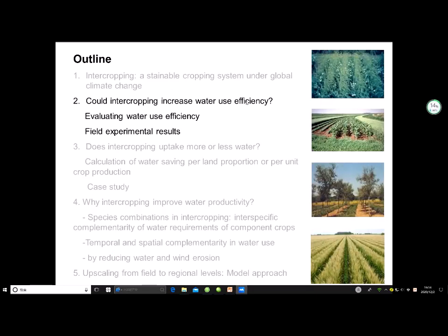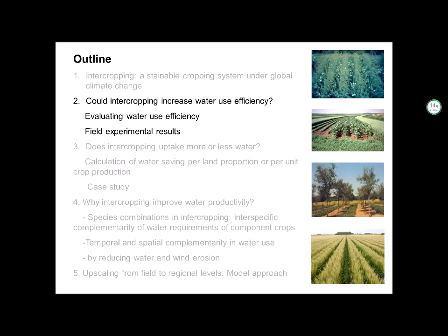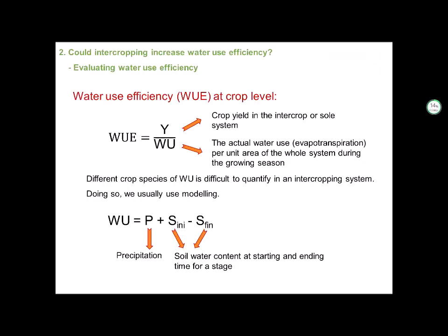The first thing we are looking at is: could intercropping increase water use efficiency? At crop level, water use efficiency equals the crop yield in the intercrop or sole crop system divided by the actual water use per unit area of the whole system during the growing season.